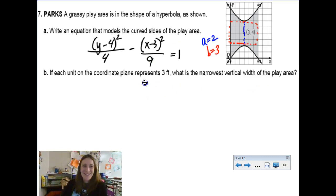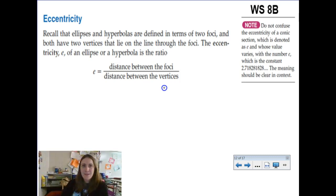If each unit represents 3 feet, what is the narrowest width of the park? So, this part right here is 4 blocks. So, every block is 3 feet. So, 4 blocks times 3 feet gives us 12 feet. That's a nice little easy question for us.